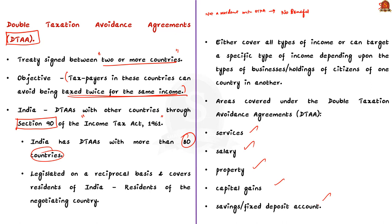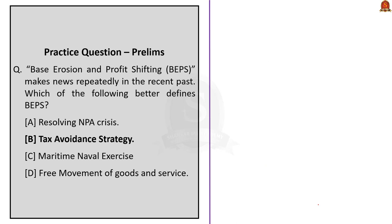With these basics, now let us see the question. BEPS is very much related to the tax avoidance strategy, so the correct option is option B. With these basic points, let us move on to the next MCQ.